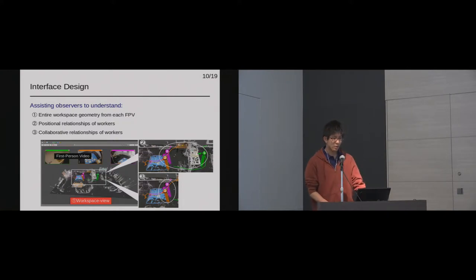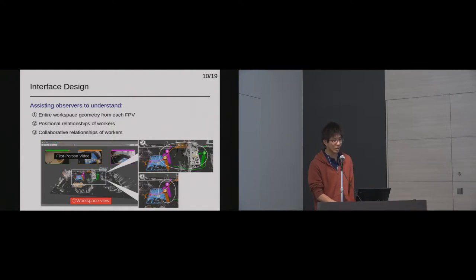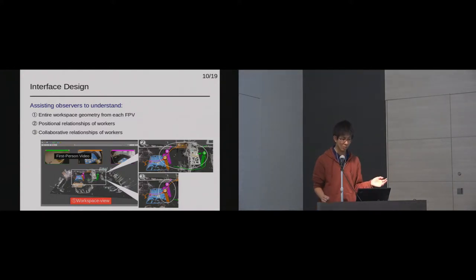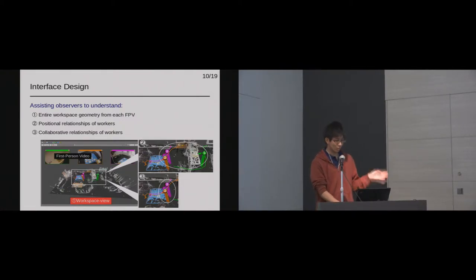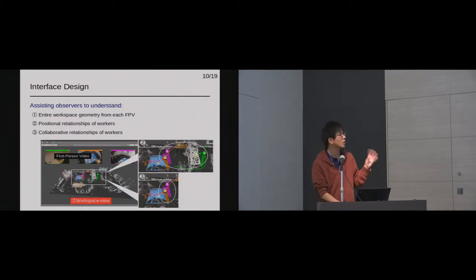Our interface is designed based on three concepts. First, by visualizing the workspace in 3D, we assist understanding of the entire workspace geometry from each first-person point of view. Second, by visualizing each camera position, we assist understanding of the positional relationship of multiple workers, such as their formations. Third, by visualizing each camera position, orientation, and pathway, we assist understanding of the collaborative relationship of workers, such as who is forming a group with whom.